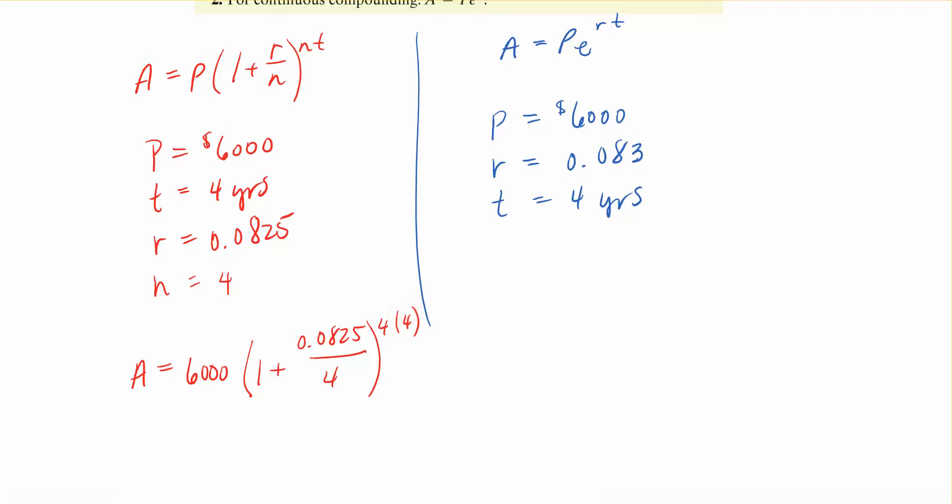The second way that I'm going to do this says that that dollar amount, that initial investment of $6,000, is being multiplied by E raised to the interest rate of .083 times four years. Now let's go do both of those in the calculator.